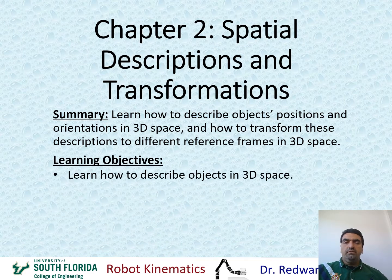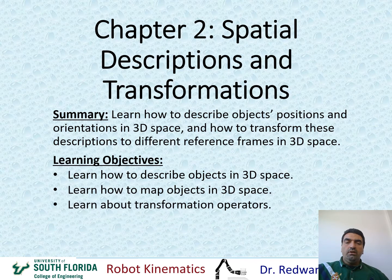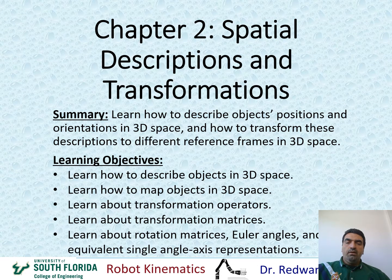Some of the learning objectives for this chapter: we'll learn how to describe objects in 3D space, including their position and orientation. We'll learn how to map objects in 3D space, changing descriptions from one reference frame to another. We'll also learn about transformation operators, transformation matrices including the homogeneous transformation matrix, and finally rotation matrices, Euler angles, and equivalent angle-axis representations of orientation.